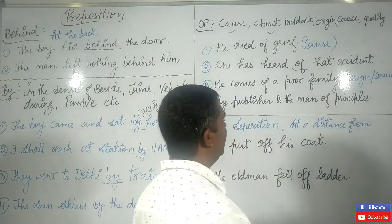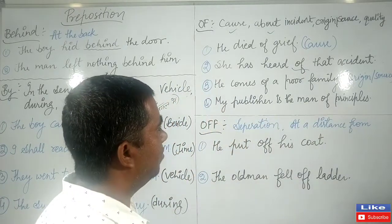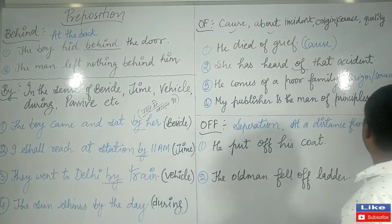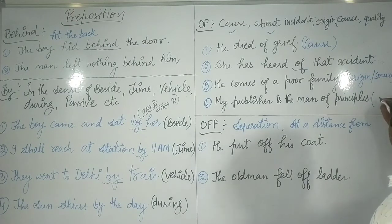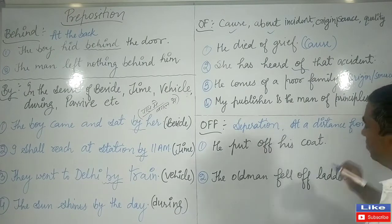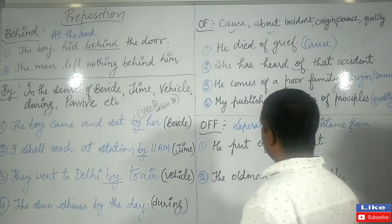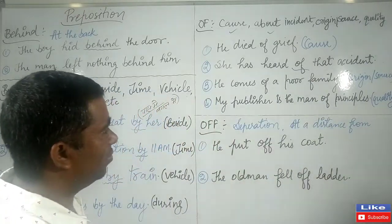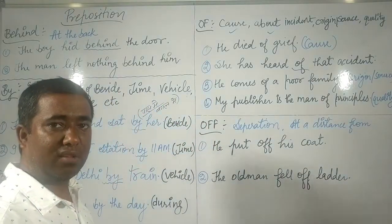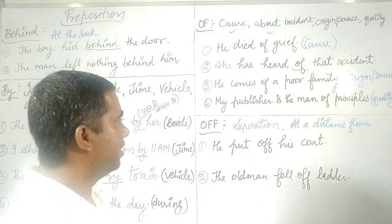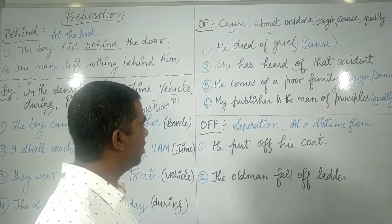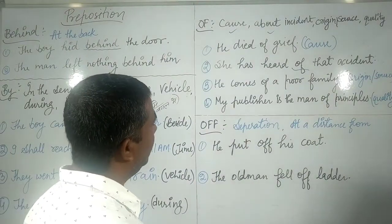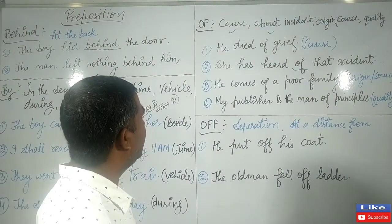The fourth use of 'of' is to describe quality. For example: my publisher is a man of principles — meaning he is a principled man. Here 'of principles' describes the quality of the person. So this is how 'of' is used to indicate quality.